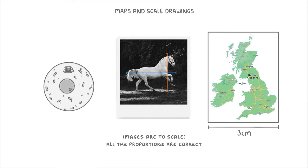There's a bit of confusion around what we call images like this, because it depends on what type of image we have. If we have a photo, then we just call it a photo, because they should always be to scale. When we have a drawing that's to scale, we call it a scale drawing. And when we have a diagram that's to scale, we call it a scale diagram. Although, in the special case of a map, we can also just call it a map.